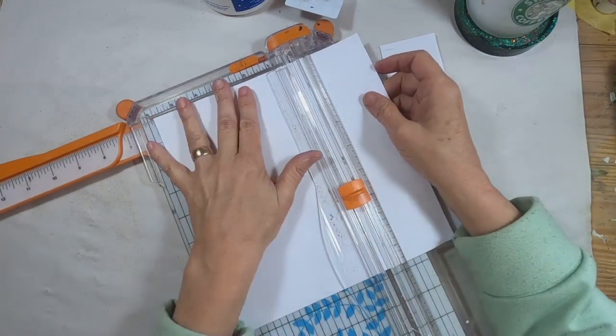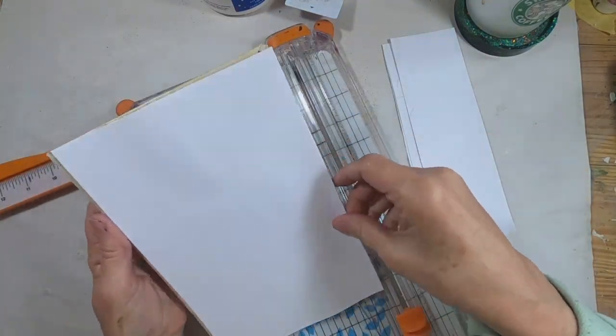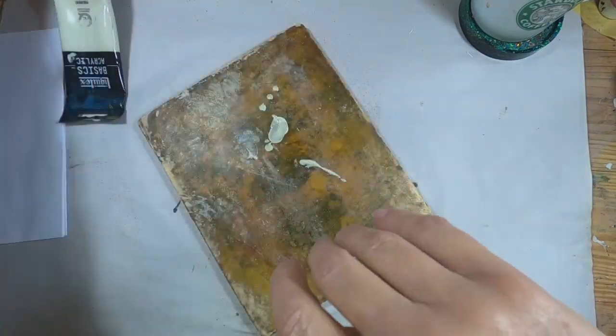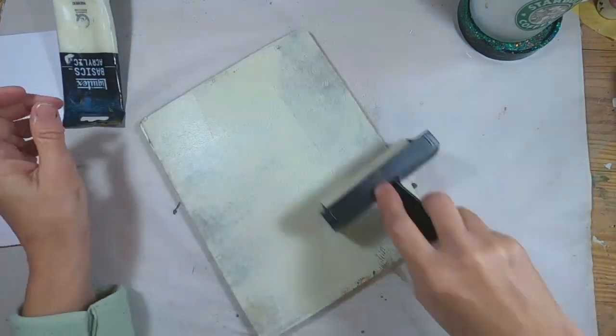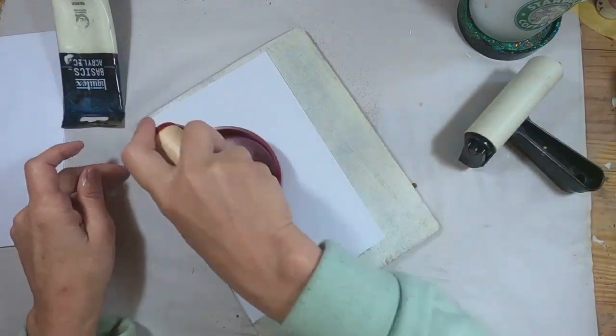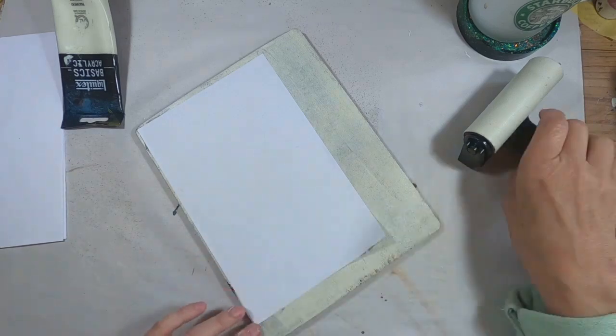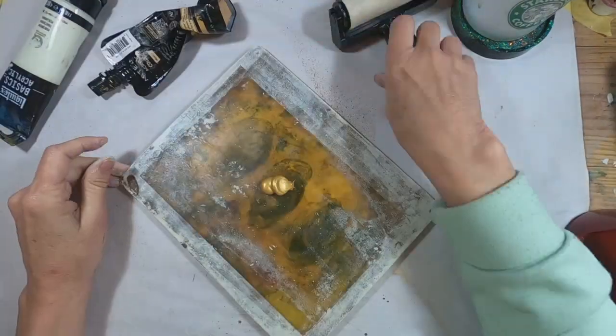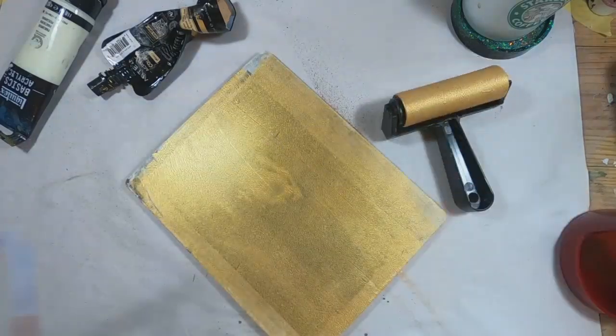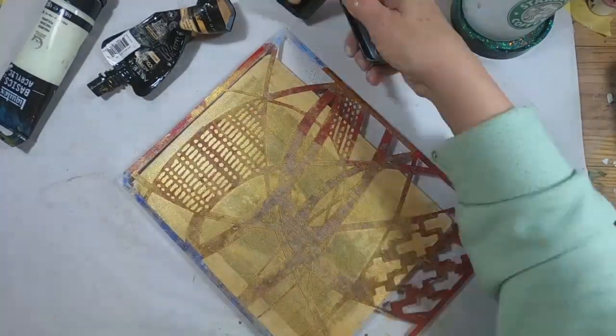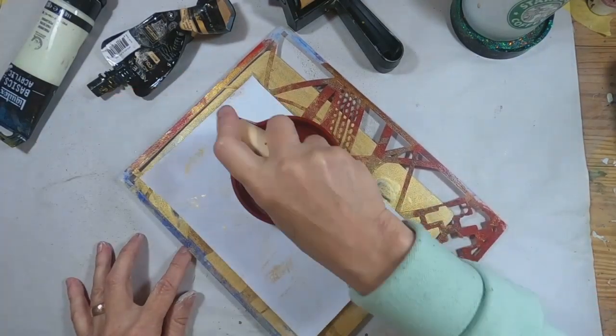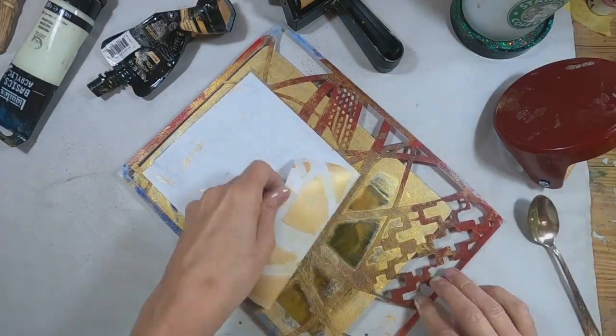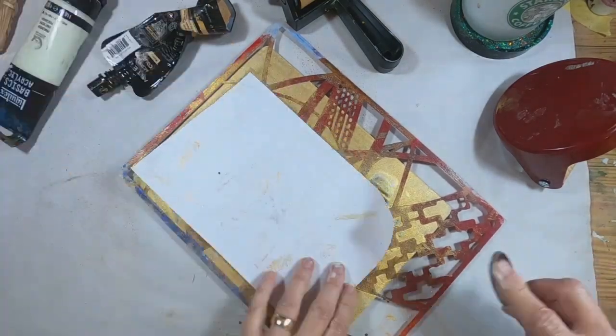Now we need to decorate the end sheets, or the inside of the front and the inside of the back. I'm just cutting to size. We'll be getting out a couple of stencils and the gel press to create the end sheets. I want to start with that parchment - that was our background for the covers and I want to be consistent on the inside.